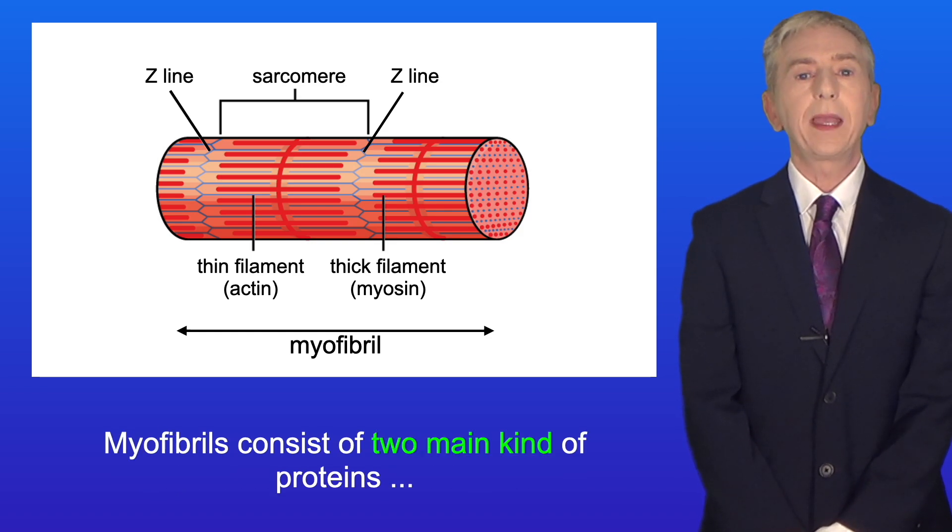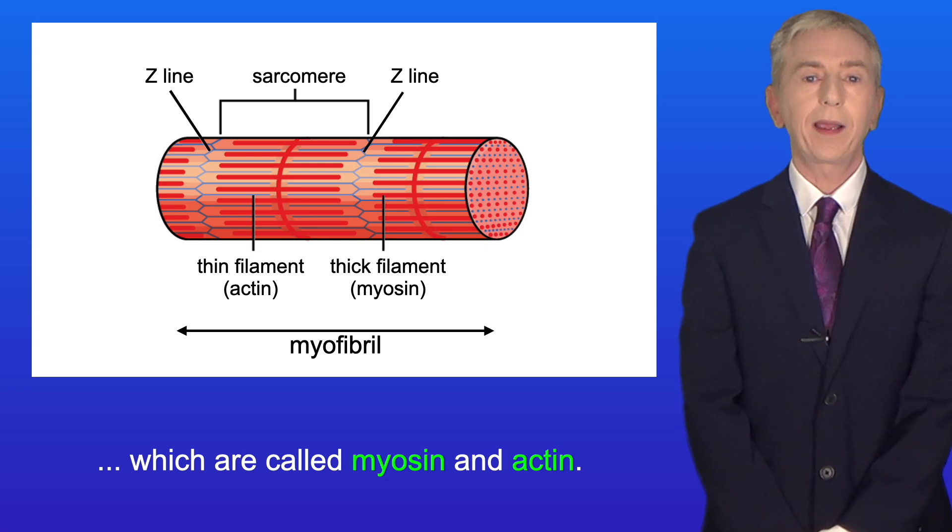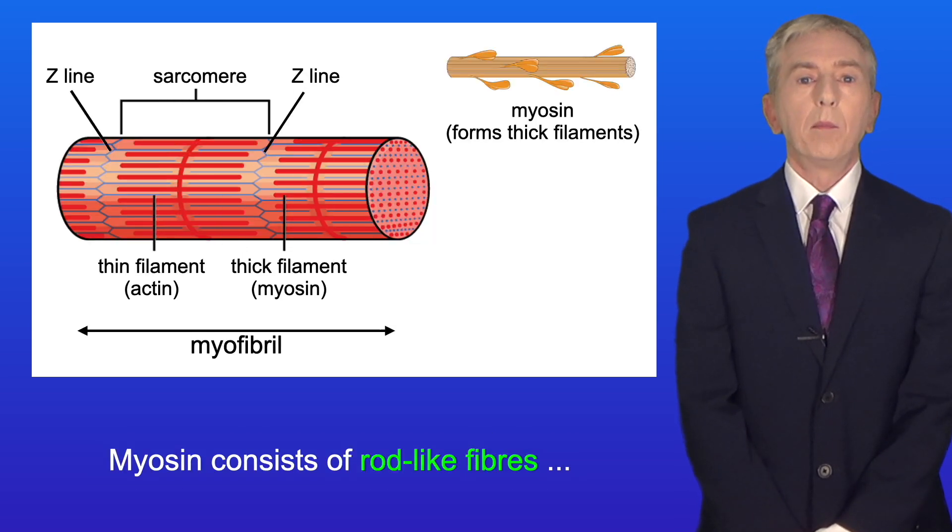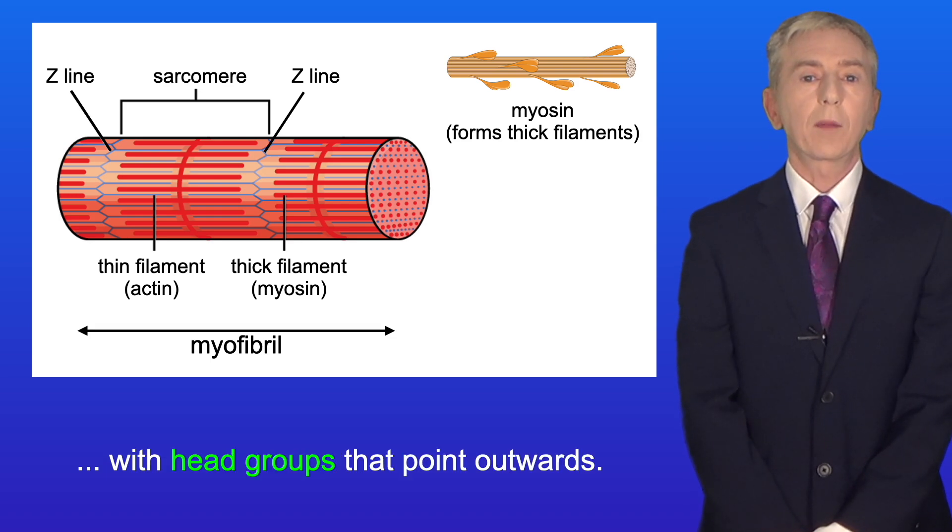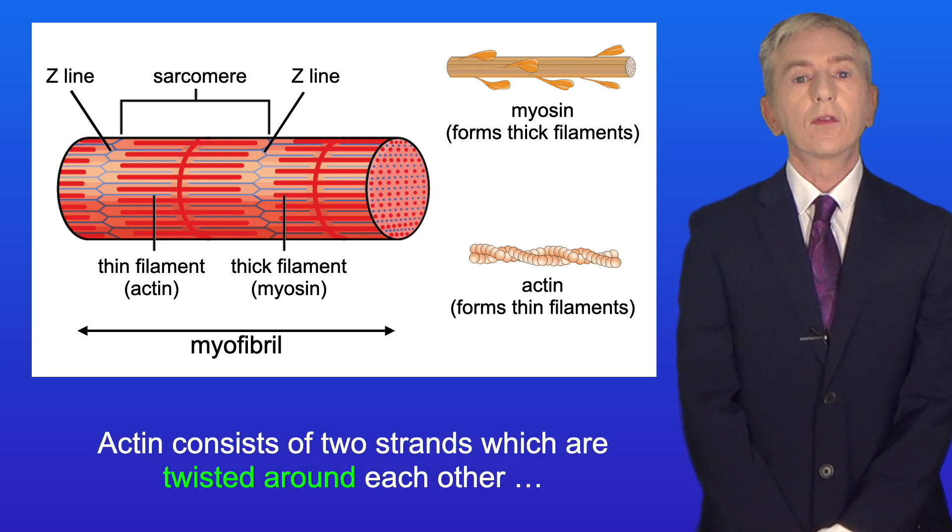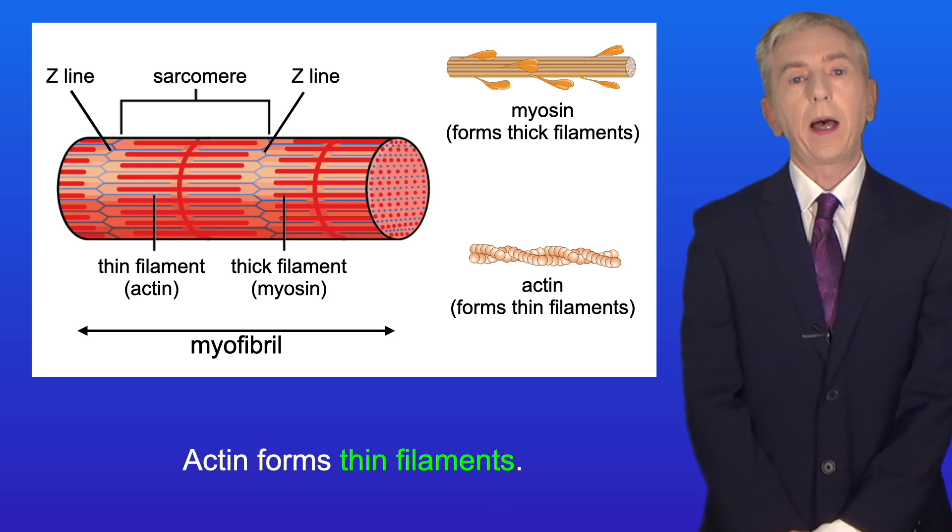Myofibrils consist of two main kinds of proteins which are called myosin and actin. These proteins are arranged to form strands which scientists call filaments. Myosin consists of rod-like fibers with head groups that point outwards and myosin forms thick filaments. Actin consists of two strands which are twisted around each other into a helical structure and actin forms thin filaments.